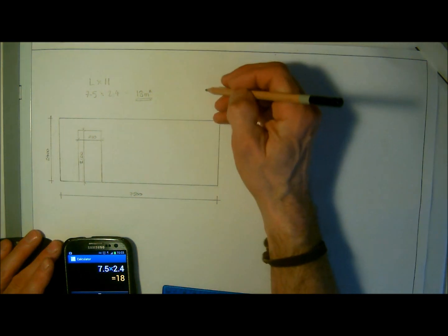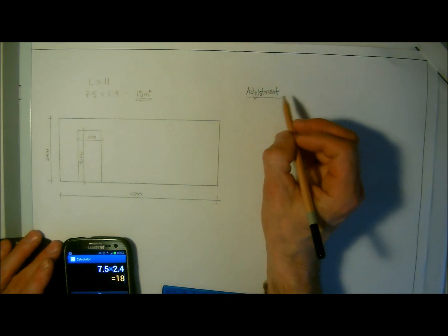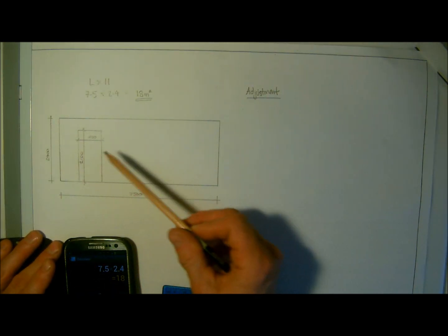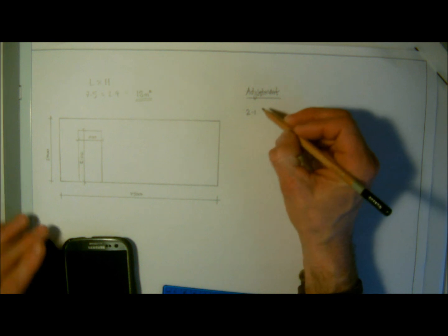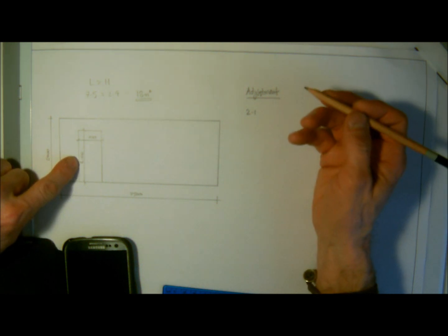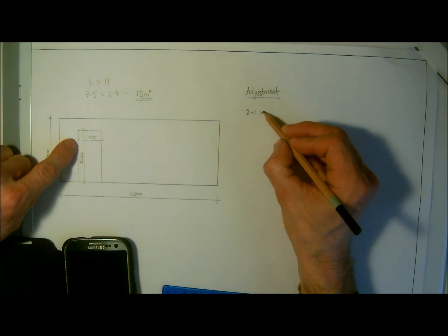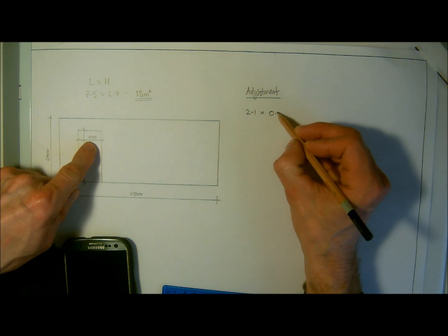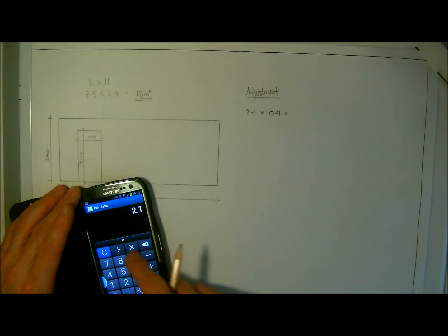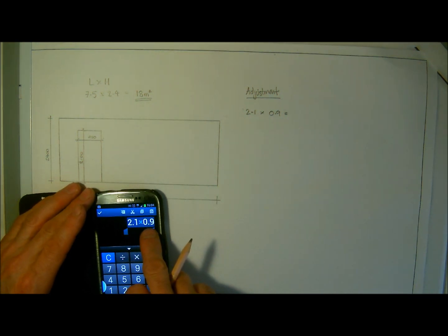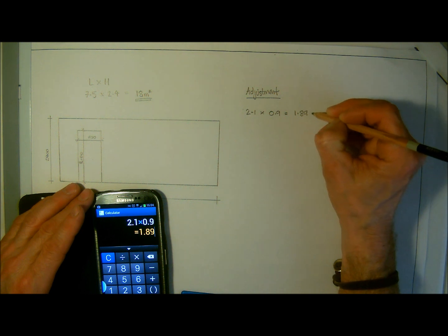We can see here we've got an adjustment. We only have one adjustment so there's not really any need to mark these into area A and area B, because there is just the one. The adjustment here is two point one, because you've got twenty one hundred millimeters, which is two thousand one hundred, which in turn is two meters one hundred. So two point one multiplied by point nine equals. Notice how the point nine looks on the calculator. Equals, and we have one point eight nine meters squared.